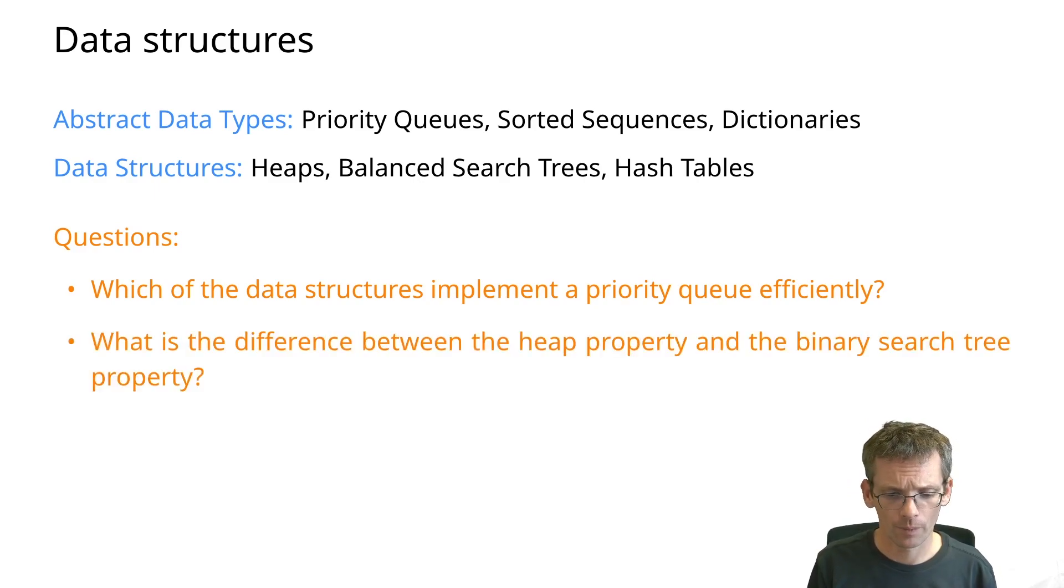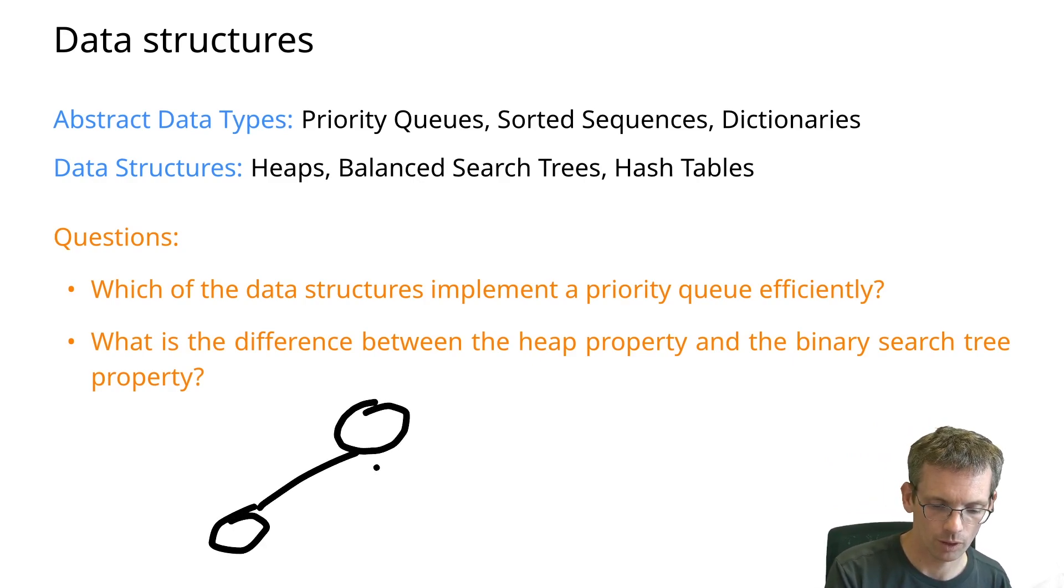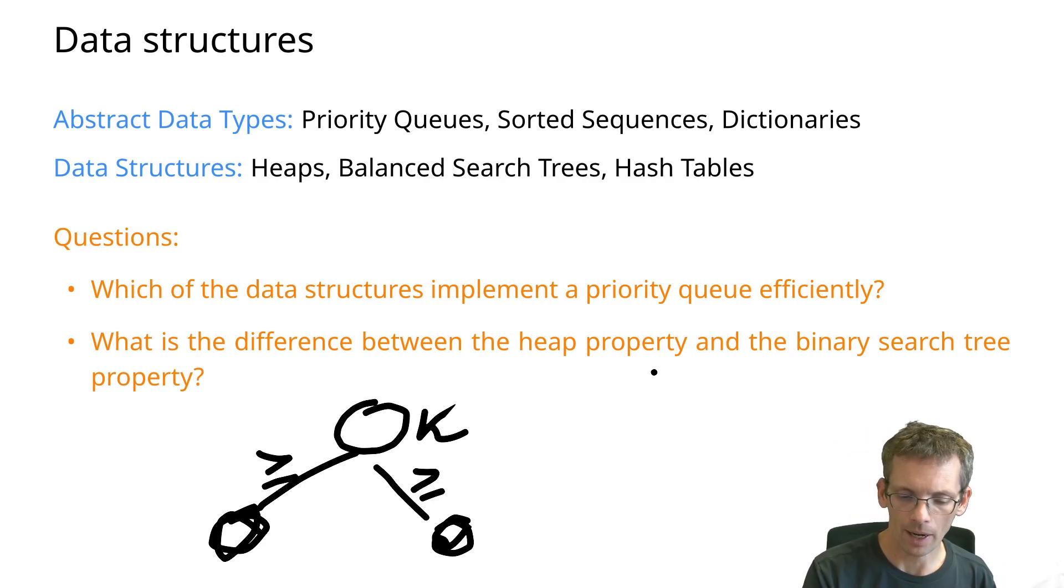Another question: what is the difference between the heap property and the binary search tree property? So what are these properties? For the heap, let's say we have a max heap. The property is: if I have the parent and the two children and I have my key here, then that is larger or equal than the key in both of the children.